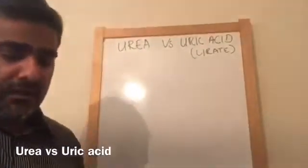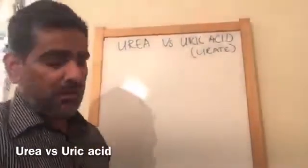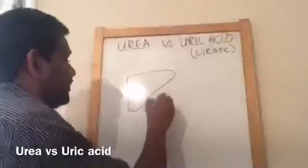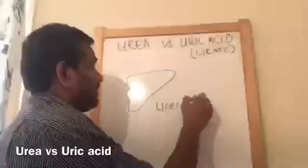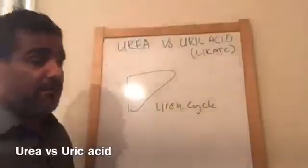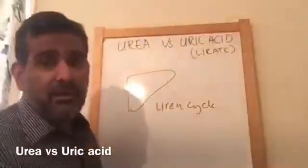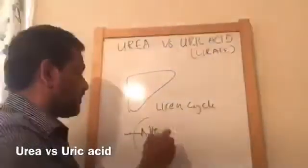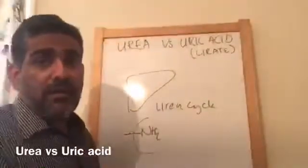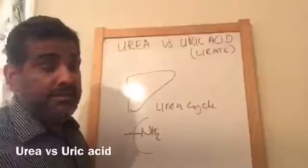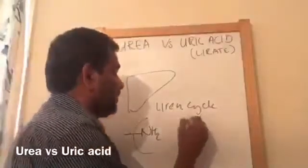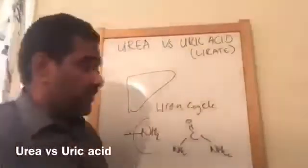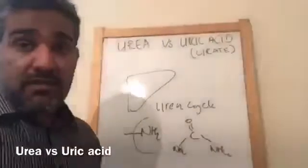First of all, we take urea. Urea is produced by the liver by a process called the urea cycle. As you all know, the urea cycle happens inside the liver. There are excessive amino acids — these amino acids contain amino groups. These amino groups are removed from the amino acids and converted to urea, and this urea is excreted via urine. This is how urea is produced.